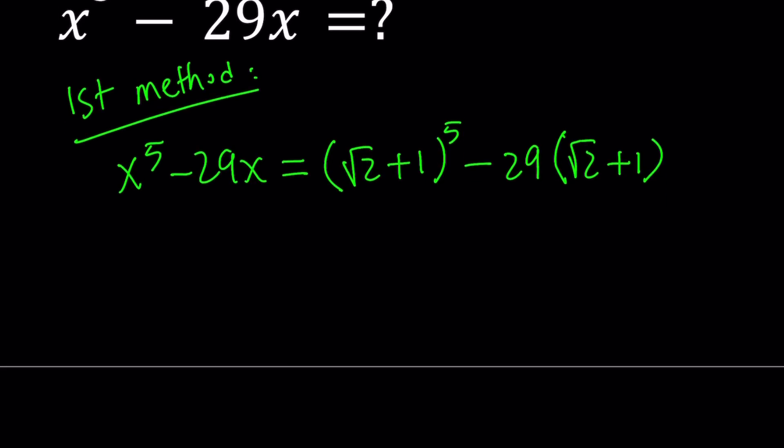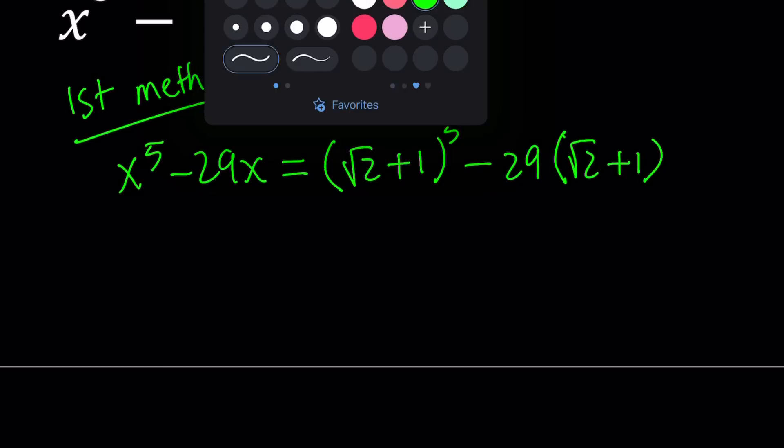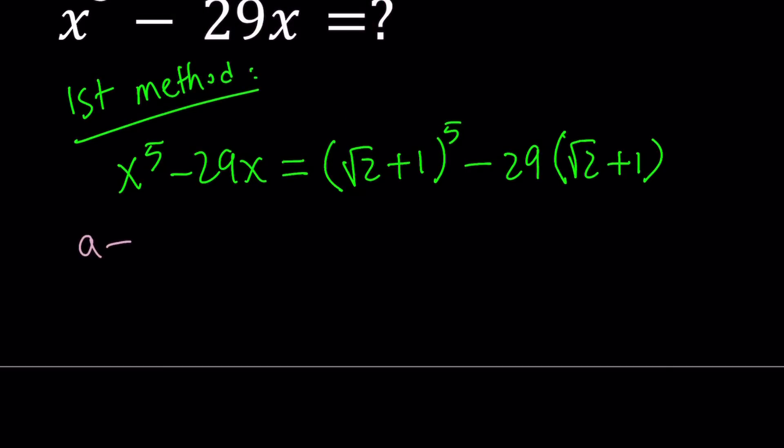And then obviously for square root of 2 plus 1 to the 5th power, we do need the binomial theorem. So let's go ahead and quickly remember what it looked like for the 5th power.